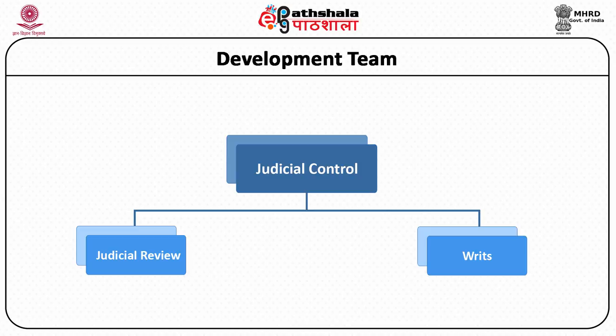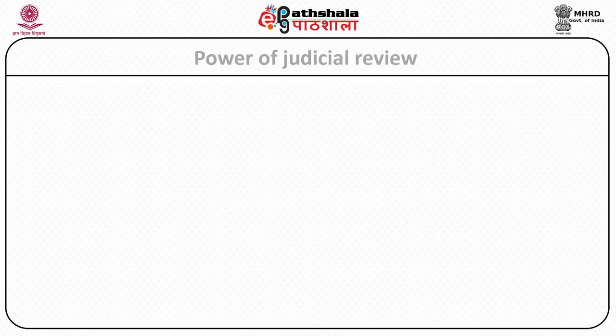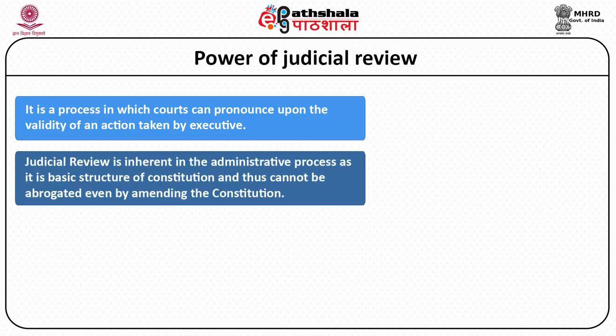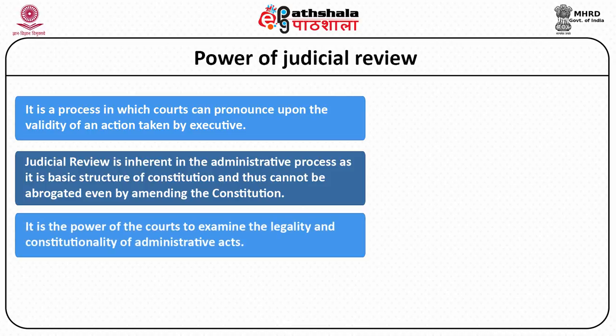The judiciary exercises control through judicial review, which is the power of the court to pronounce upon the validity of an action taken by the executive. Judicial review is inherent in the administrative process and is a basic structure of the constitution that cannot be abrogated even by constitutional amendment. It is the power of the court to examine the legality and constitutionality of an administrative act. If the court finds any act to be ultra vires — beyond the power conferred — it can strike it down as unconstitutional or void ab initio.